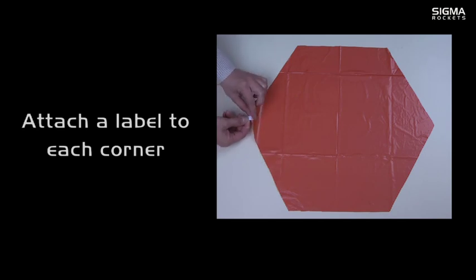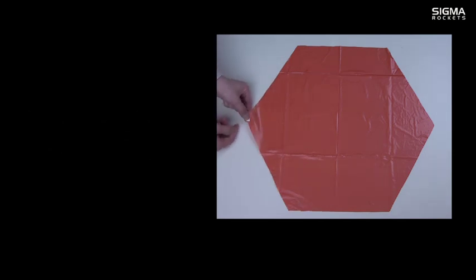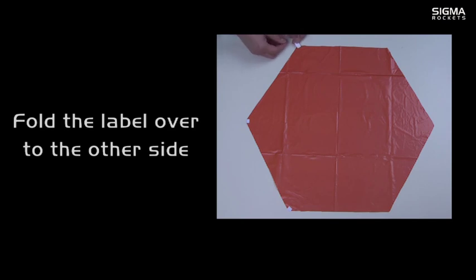Attach a small label or small piece of masking tape to each corner such that you can fold it over to the other side. This will provide more strength.